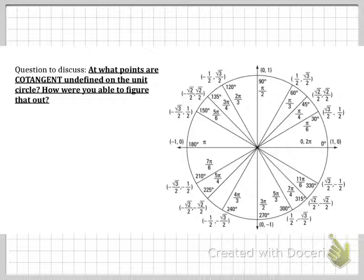Now that we know how to graph tangent, let's take a look at cotangent. So let's take a look at what points are cotangent undefined on the circle.